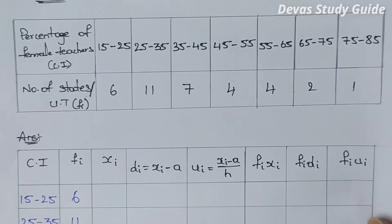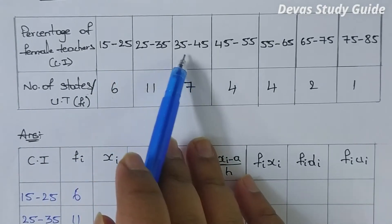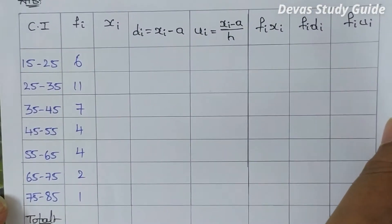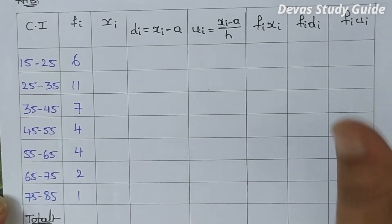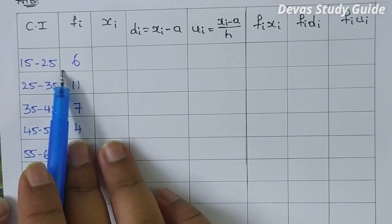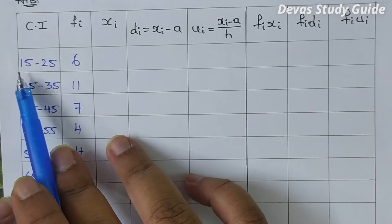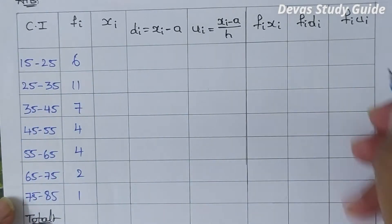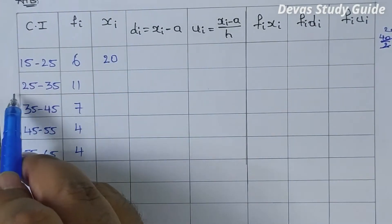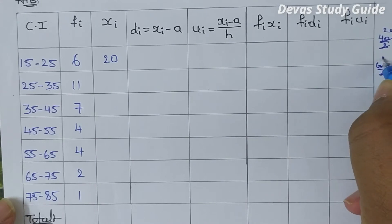I will show you the percentage of female teachers: class intervals 25-35, 35-45. Computing midpoints xi: 15 plus 25 is 40, 40 by 2 is 20; so xi is 20. Next: 25 plus 35 is 60, 60 by 2 is 30.